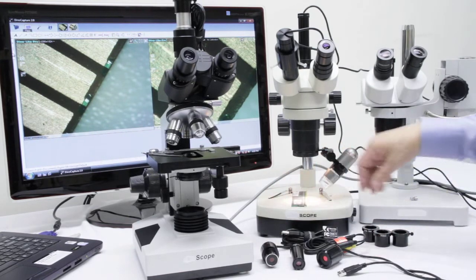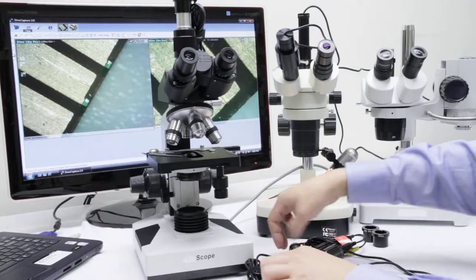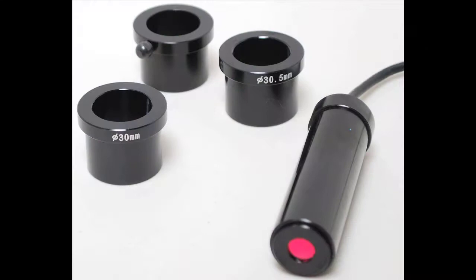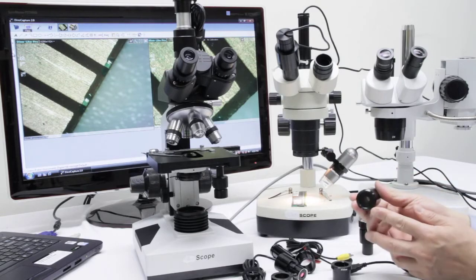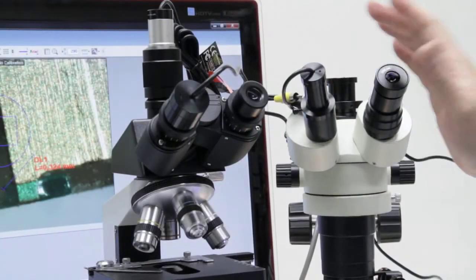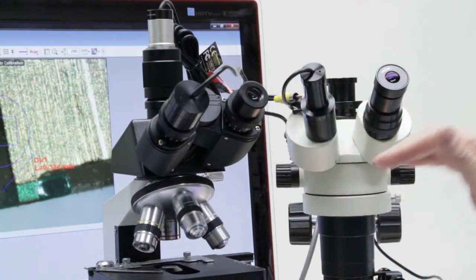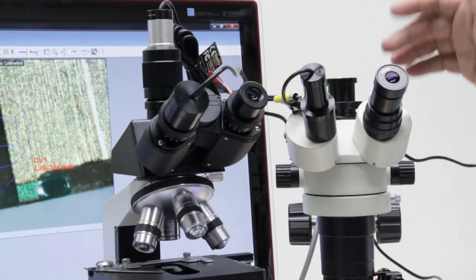There are 1.3 megapixel cameras and a 5 megapixel model. Certain models come with 30 millimeter, 30.5 millimeter, and/or C-mount adapters. The AM423C is the standard C-mount or trinocular size. Traditional microscopes usually have 23 millimeter, 30 millimeter, or 30.5 millimeter eyepieces.